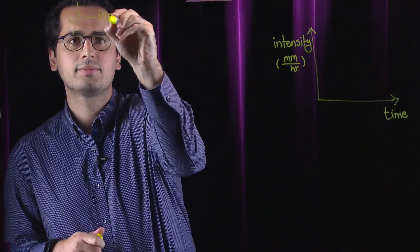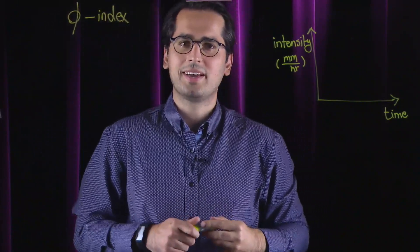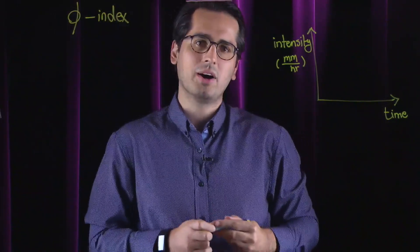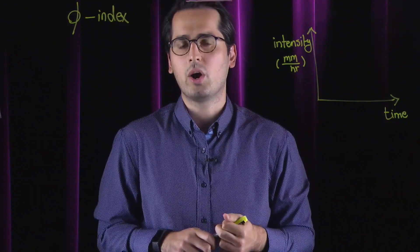Phi index. The Phi index method is a single parameter model that assumes a constant infiltration capacity, Phi, for a watershed.